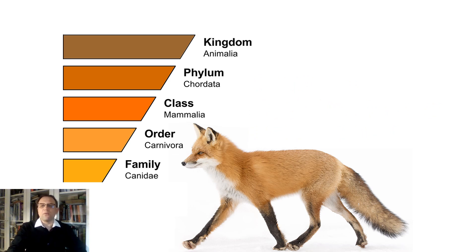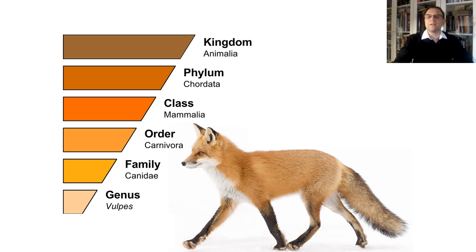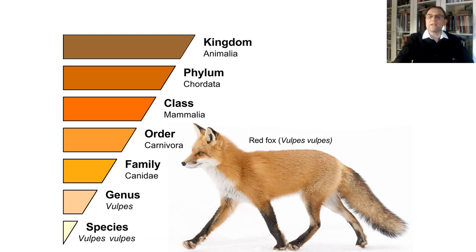The taxon more specific than order is family. Foxes belong to family Canidae. Canis in Latin means dog. Canidae is a biological family of dog-like carnivorans. Going further is an even more specific taxon called genus. Foxes belong to genus Vulpes, which is a genus of family Canidae. Its members are colloquially referred to as true foxes. The genus Vulpes contains 12 different species of true foxes. The most widespread is the red fox, Vulpes vulpes, found across most of the northern hemisphere.